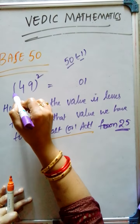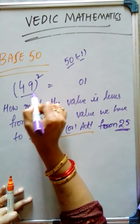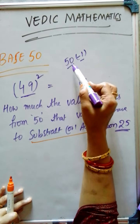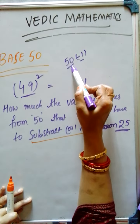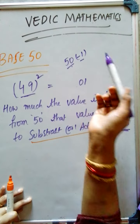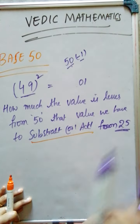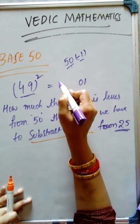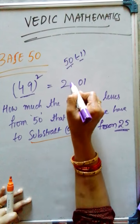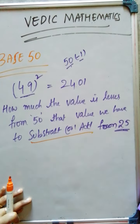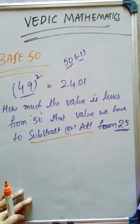Now, here the given value is how much lesser from 50? How much we have to subtract from 25? 1. That is 24. So, 2, 4, 0, 1 is our answer.